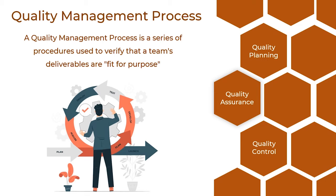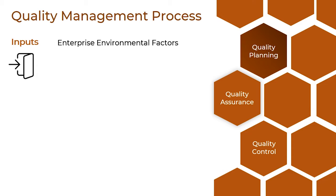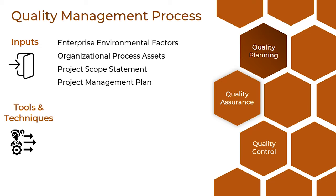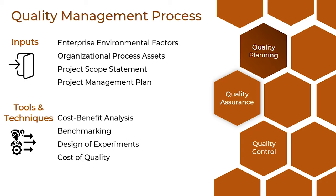Quality planning is the first phase. The inputs included are enterprise environmental factors, which relate to conditions that influence, constrain, or steer the project, program, or portfolio that are not under the immediate control of the team. Then organizational process assets is our next input. PMBOK defines this as the plans, processes, policies, procedures, and knowledge bases specific to and used by the performing organization. Next, the project scope statement comprises a full explanation of the work that must be completed to provide a project's output on time and within the budget. We also have the project management plan. The tools and techniques include cost-benefit analysis, benchmarking, cost-to-quality, and many other additional tools.